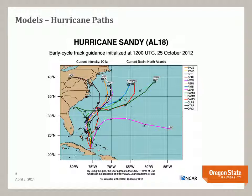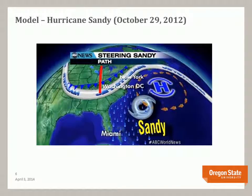Here are some models that look at the projected paths that Sandy could have taken. These are all based on different atmospheric parameters. As was outlined, the forecasting of weather and the science of meteorology — and actually a lot of sciences — are all hinged around probability. They can never really accurately forecast 100% of the time, but they can give us approximations. I believe this is the actual path that Sandy took.